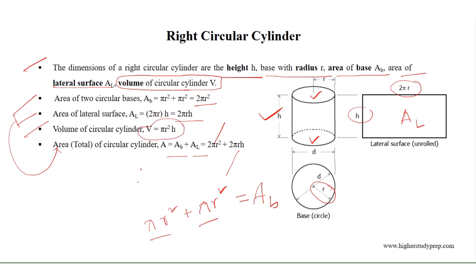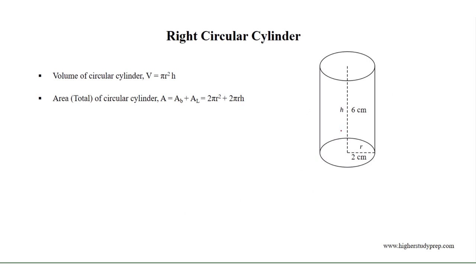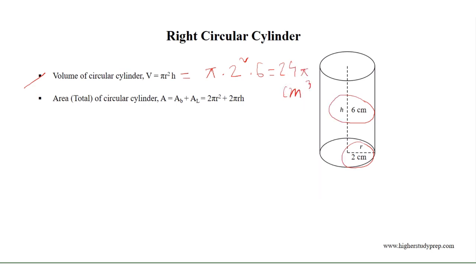The volume of the circular cylinder is equal to pi r squared h. For this right circular cylinder, the height is equal to 6 centimetres and the radius is equal to 2 centimetres. Therefore the volume equals pi times 2 squared times 6, which results in 24 pi cubic centimetres.